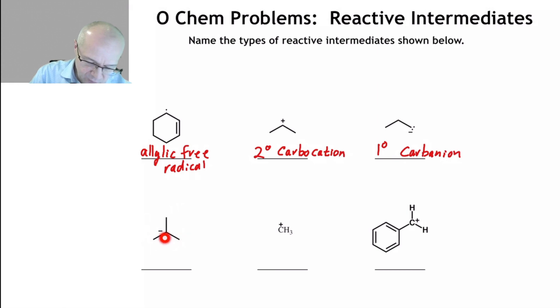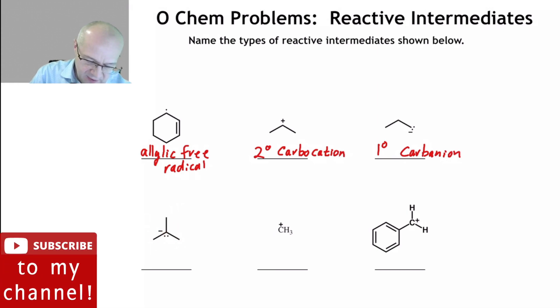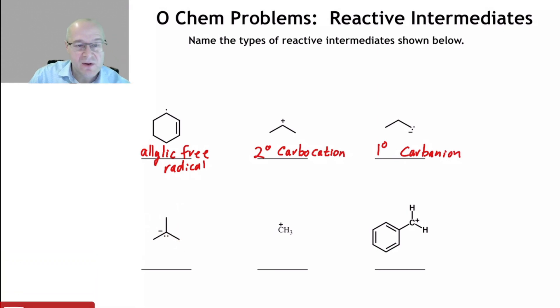Over here, we have a negative charge on the central carbon. It has one, two, three alkyl groups on it. That is a tertiary carbocation or carbanion, excuse me. It's a tertiary carbanion, not a carbocation.